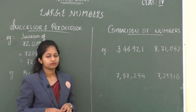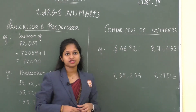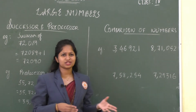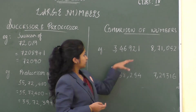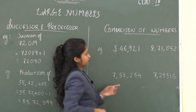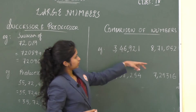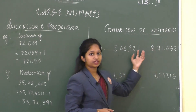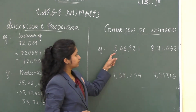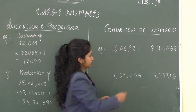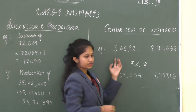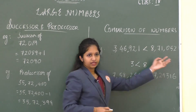Hope you all understood this. Now we'll move on to comparison of numbers. Why do we compare two numbers? We have to see which number is greater and which is lesser. Here I have some larger numbers. Count how many digits — here there are 6 digits, and here also 6 digits. To compare, just look at the first digit of each number. Here it is 3 and here it is 8. Since 3 is less than 8, this number is less than the other number.